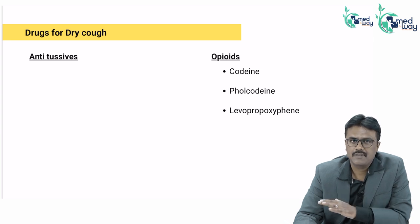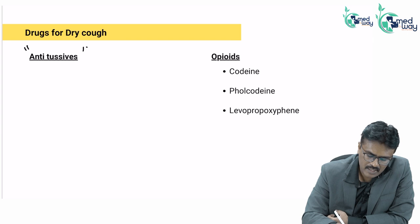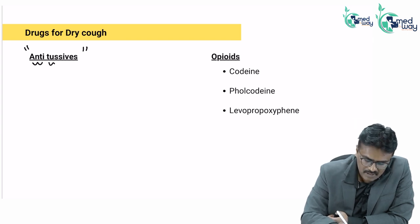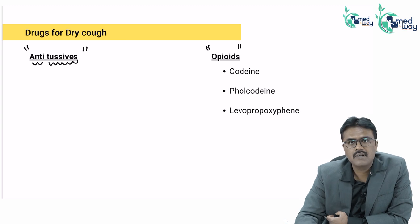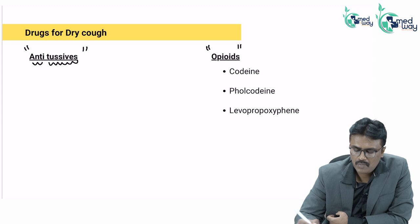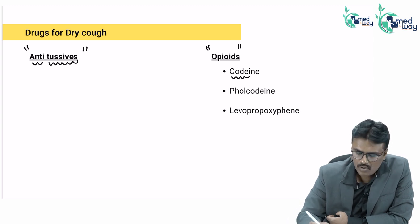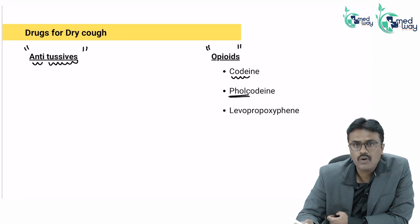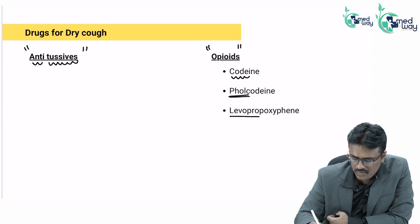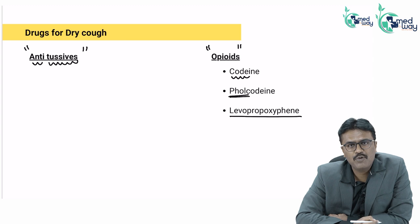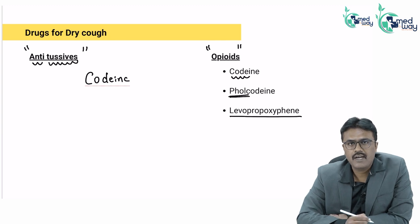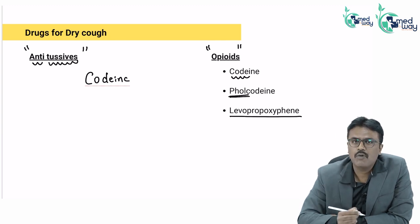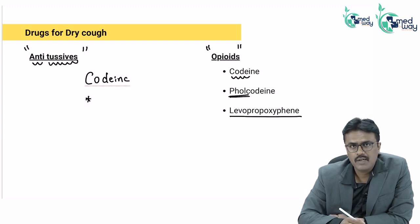Dry cough should be suppressed. The drugs which suppress the cough are called antitussives. We have drugs called opioids — their main action is in the brain, so they suppress the cough. The most important drug is codeine. If you add 'fol' it becomes folcodeine, and another drug is levopropoxyphene. The drawback of codeine is that it becomes morphine in the body, so it's an opioid.